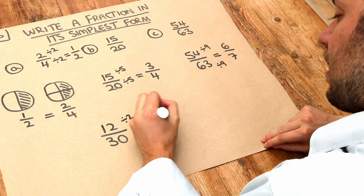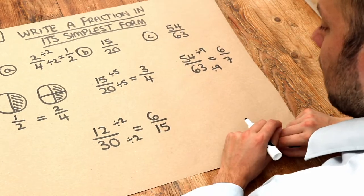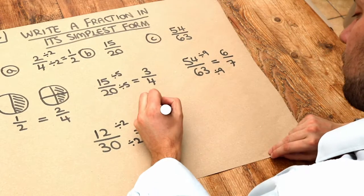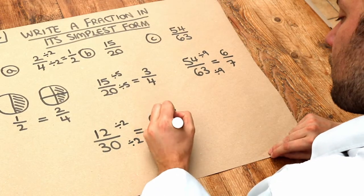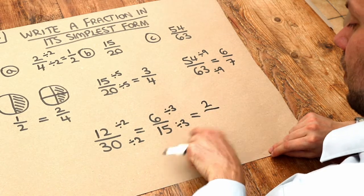Now 12 divided by 2 is 6, and 30 divided by 2 is 15. But there's another number we can divide these by—these are both in the 3 times table. So I can divide them both by 3. 6 divided by 3 is 2, and 15 divided by 3 is 5.